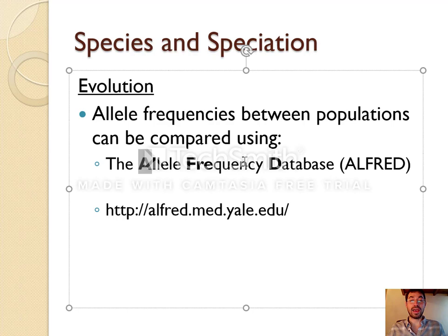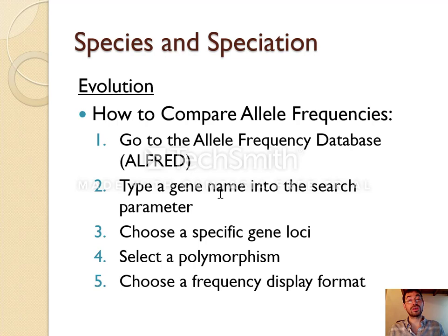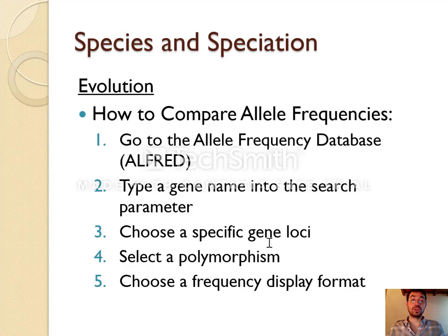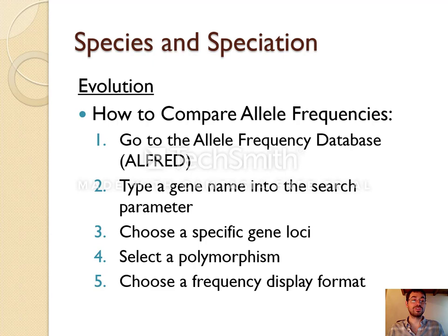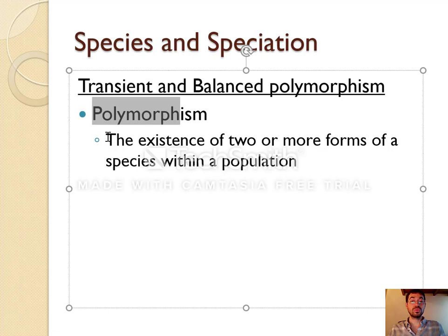Allele frequencies can be compared online using a program called Alfred — the allele frequency database. Later in class we'll be doing an activity where you actually grab some of this data. To use Alfred, you would go to the website, type in a gene — for example, the HERC2 gene that codes for eye color — choose a specific location, and select one version such as blue eyes or brown eyes, then look at them as a pie graph, which is pretty fun to see different allele frequencies around the world. Different versions of physical characteristics are often called polymorphisms — from 'morph' meaning shape — so polymorphism means many shapes, referring to the existence of two or more forms of the species, for example eye colors, hair color, etc.